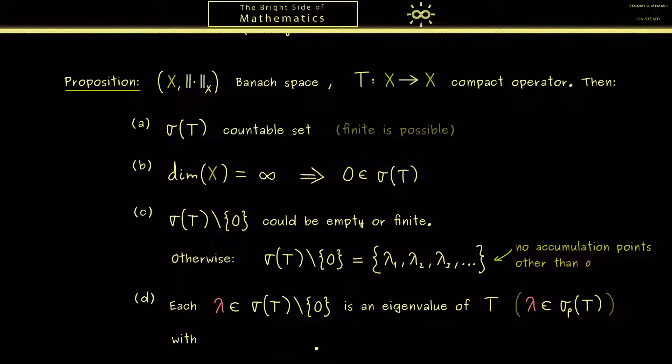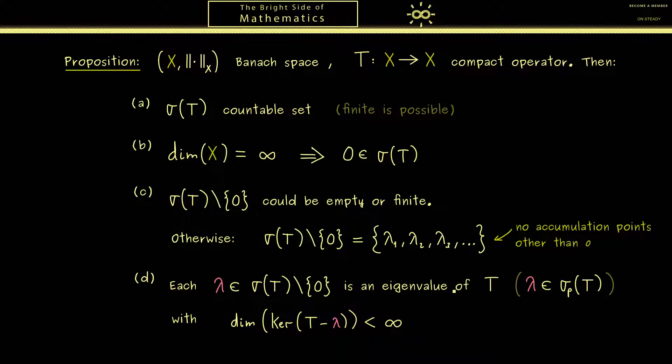Moreover, as I said before, the corresponding eigenspaces are still finite dimensional. So in this regard, you see, the spectrum here is very similar to the spectrum of a matrix. However, of course, we could have infinitely many eigenvalues and eigenspaces. And on the other hand, it could happen that 0 is an eigenvalue with an eigenspace that is infinite dimensional. But of course, it could also happen that 0 is not in the point spectrum at all.